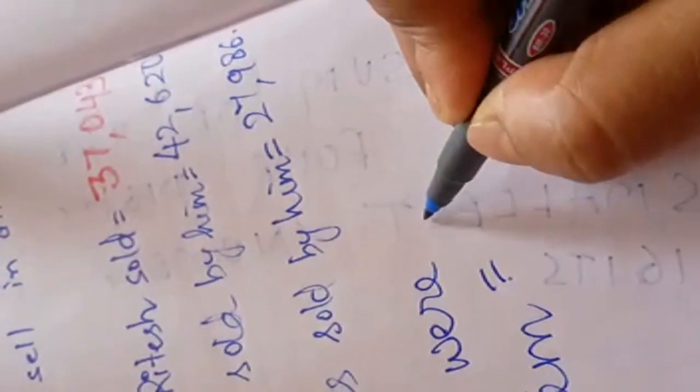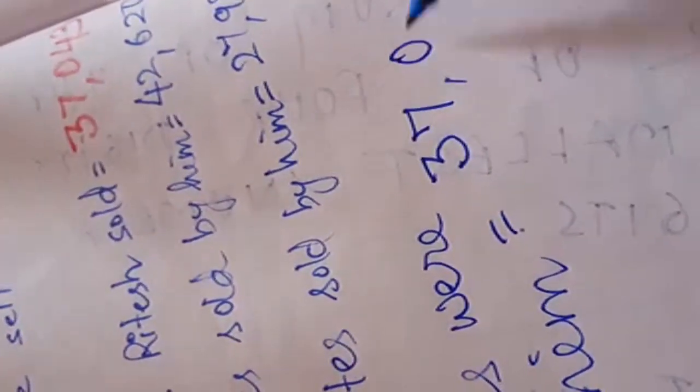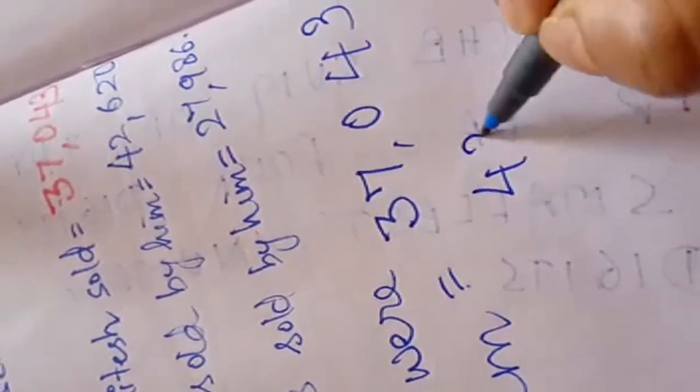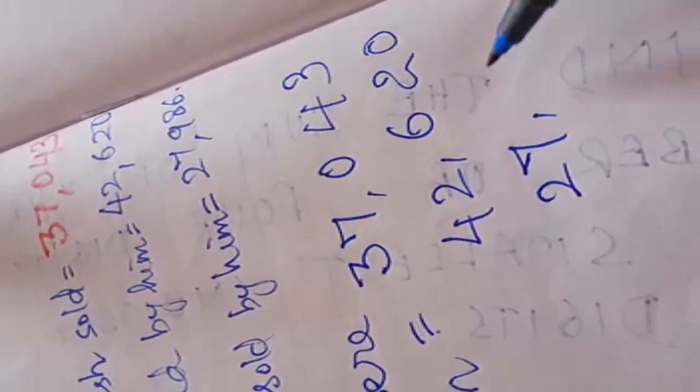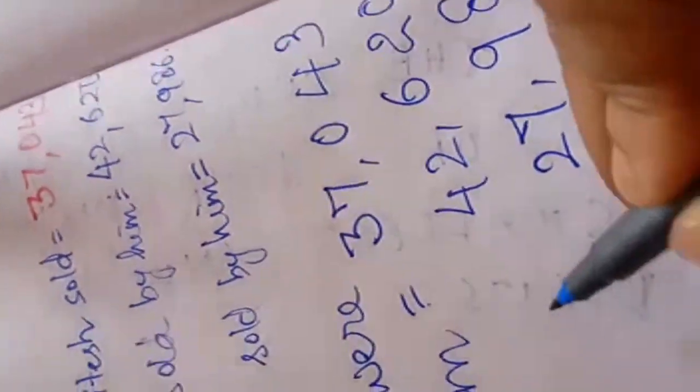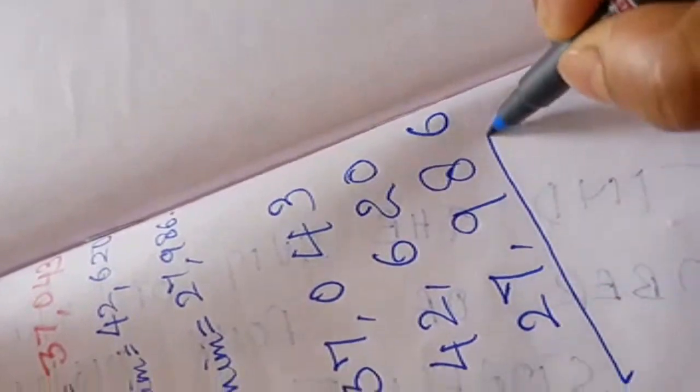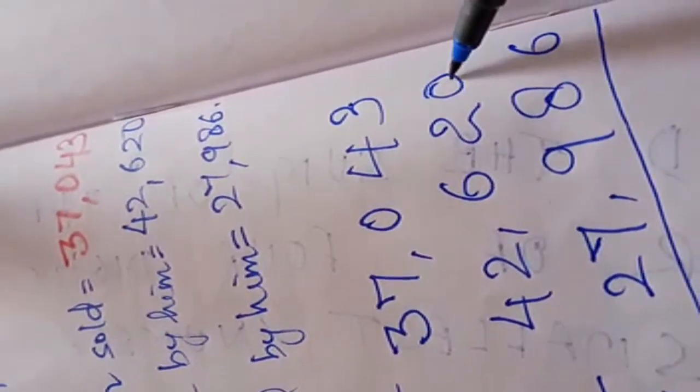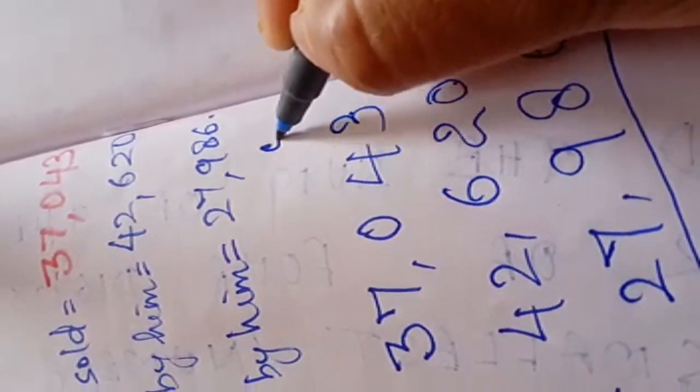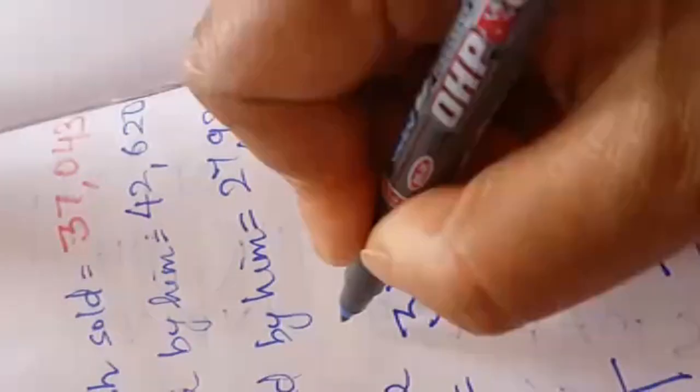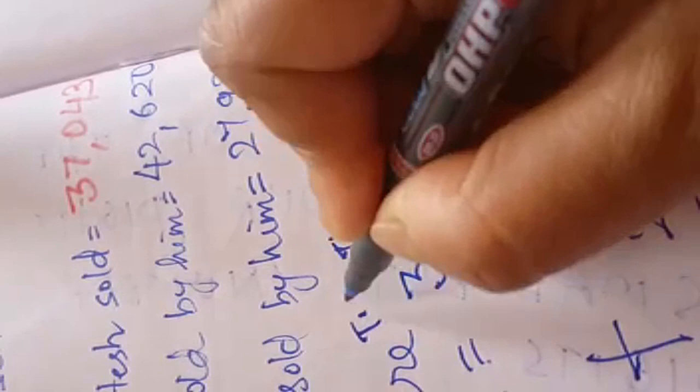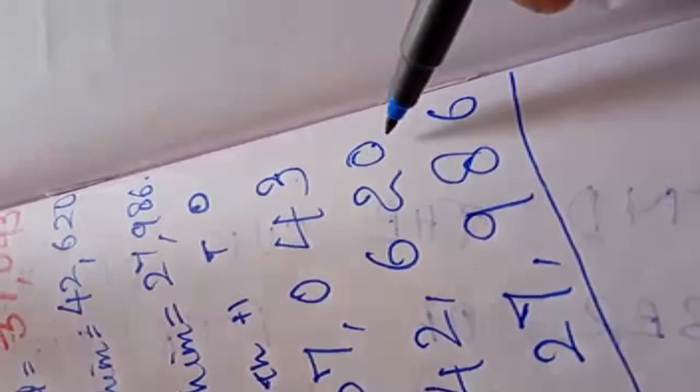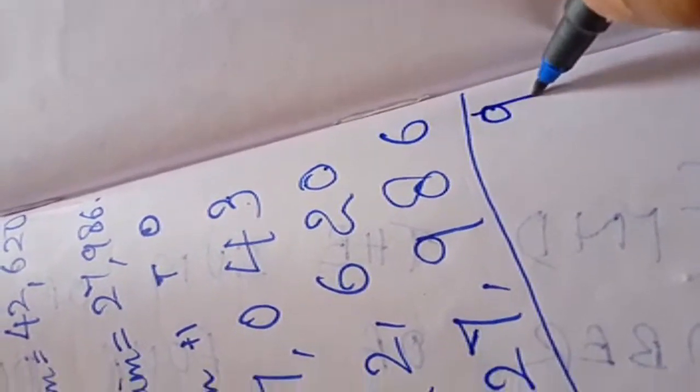So, total kites were sold by him. What we have to do children? We have to add it. So, firstly 37,043, then 42,620, then 27,986. Now putting the sign of addition. Now I am adding it all. 3 plus 0 plus 6. It is at the ones place, tens place, hundred, thousand, and 10,000. So, starting from the extreme right side, ones place: 3 ones plus 0 ones plus 6 ones, it is 9 ones.